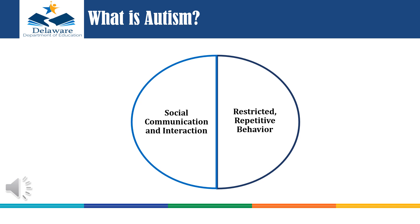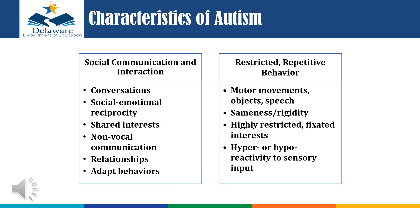Looking at this graphic, autism can be thought of as a dyad of symptoms. Individuals with autism may have challenges in social interactions, communication, and may exhibit sensory sensitivities as well as repetitive behaviors or intense interests in specific topics. The characteristics of the dyad of symptoms that the DSM-5 has identified are social communication and interaction and restricted repetitive behavior.